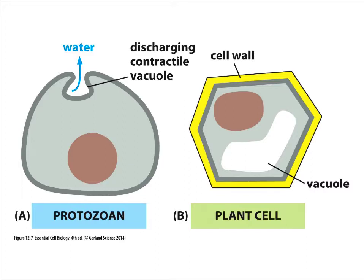Over evolutionary time, cells have come up with different adaptations to cope with the water movement problem. Protozoans, single-celled creatures like an amoeba, have solved the problem by developing a vacuole inside the cell into which water is pumped on a regular basis. When the vacuole gets full, it fuses with the membrane of the cell and eliminates its contents. Then another vacuole forms inside the cell and picks up more water, allowing the organism to continue living in a watery environment.